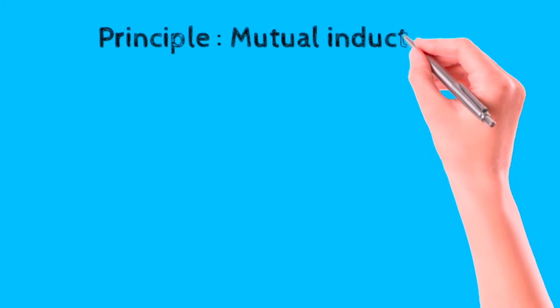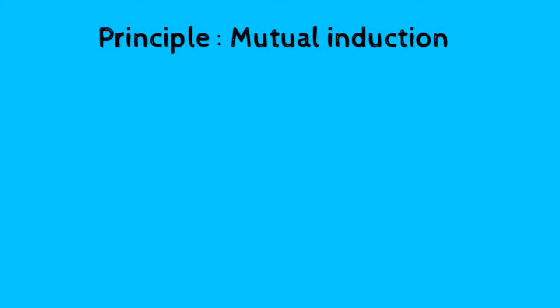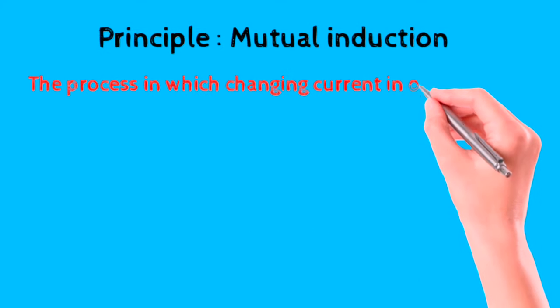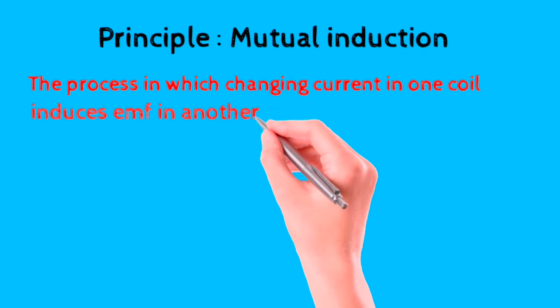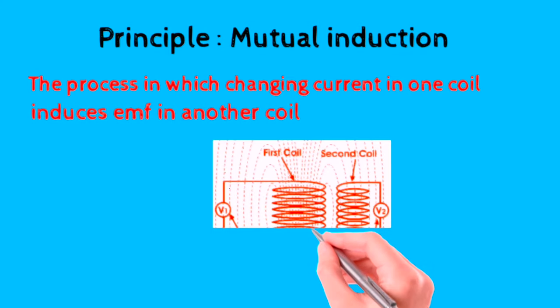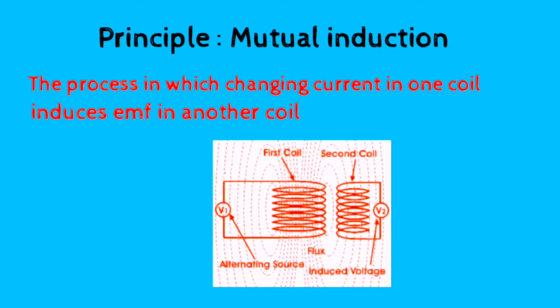The working principle of a transformer is mutual inductance. Mutual inductance is a phenomenon in which a change of current in one coil causes an induced EMF in another coil. In simple words, when we place any coil near to the alternating current carrying coil, then the flux that induces in the primary coil links with the secondary coil. And because of this flux linkage, an EMF induces in the coil.